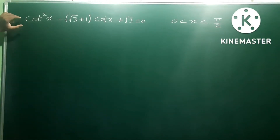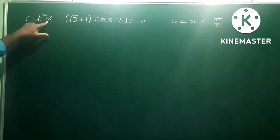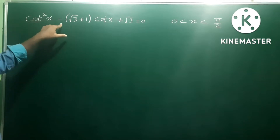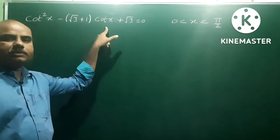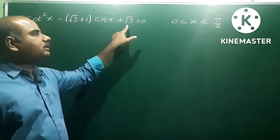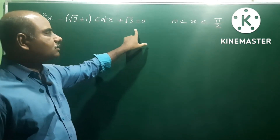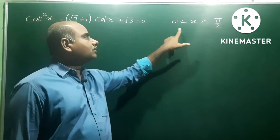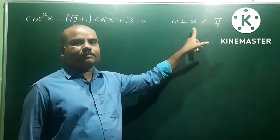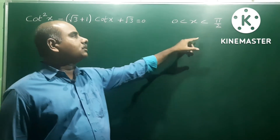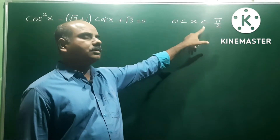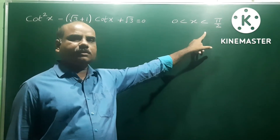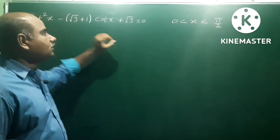Given equation: cot²x minus (√3 + 1) into cotx plus √3 is equal to 0, where x lies between 0 and π/2. So x is equal to 0 to 90 degrees.